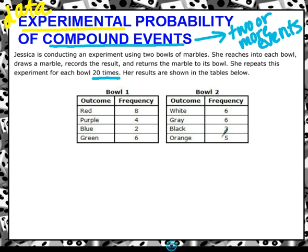So notice we have two events. We have bowl one and bowl two. Two different things are happening here. You're drawing from two different bowls. That's what makes this compound. So let's say we want to find the experimental probability of drawing a red from bowl one and a white from bowl two.